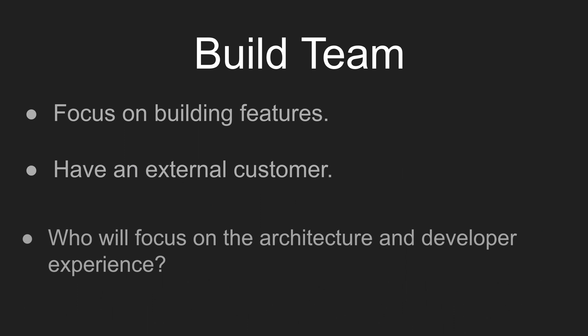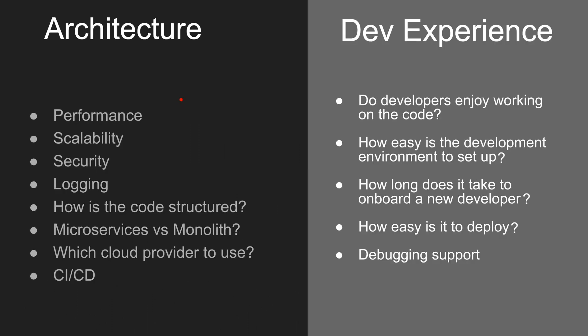With that being said, who's going to focus on the architecture and developer experience? Architecture deals with cross-cutting concerns — things that concern all the different teams within your organization, from performance, scalability, security, and logging. You may ask questions about how the code is structured and whether it's structured correctly. Architecture may also ask questions about whether you should be using microservices versus a monolith, and making the decision on which cloud provider to use, such as Azure, AWS, or Google.